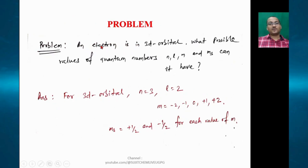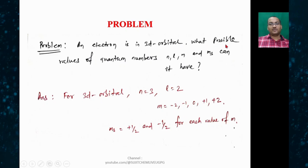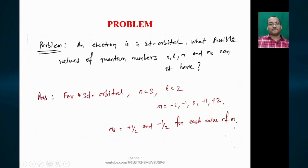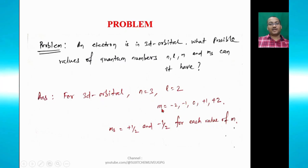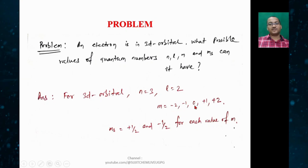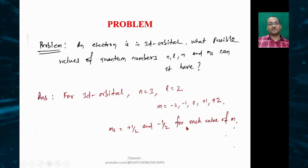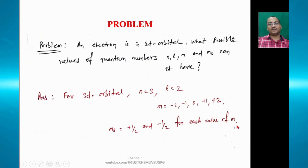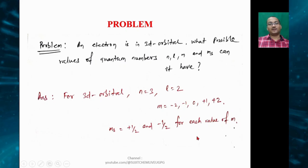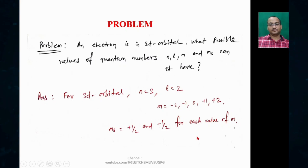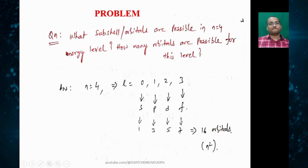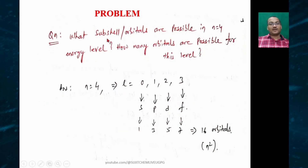Let's try a problem: an electron in a 3d orbital — what possible values of quantum numbers n, l, m, and ms can it have? For 3d orbital, n=3 and l=2, so m values will be −2, −1, 0, +1, +2, and for spin quantum number ms will be +½ and −½ for each value of m, meaning each electron will have a different set of quantum numbers.